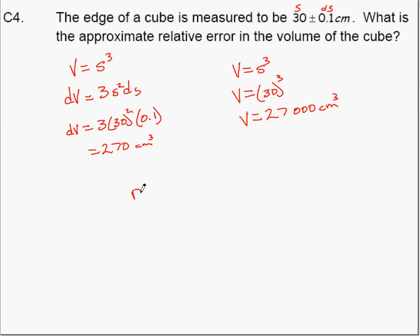Then the relative error equals the absolute error divided by the volume: 270 over 27,000, which gives you 0.01, or a 1% relative error.